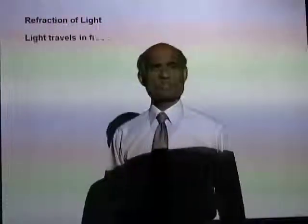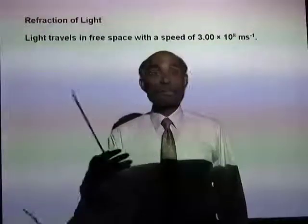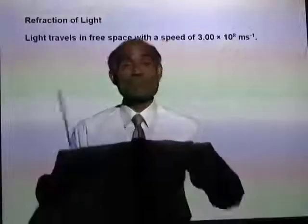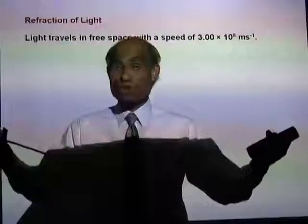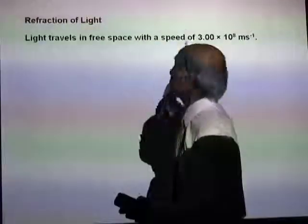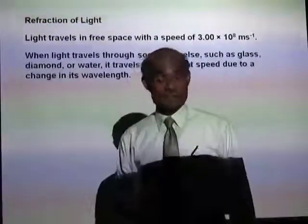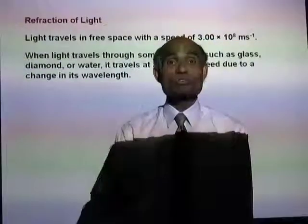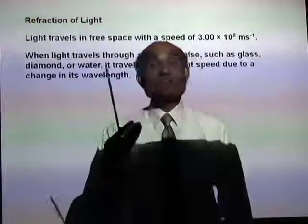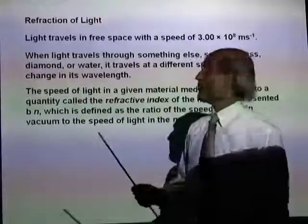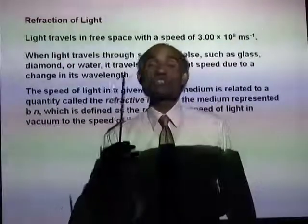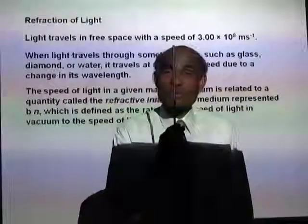Let's now talk about refraction of light. Light travels in free space with a speed of 3 × 10^8 m/s. In fact, all electromagnetic radiations travel with the same speed in vacuum. But if you allow light to pass through any other medium such as glass or water, its speed will reduce. The reduction in speed is always associated with a change in the direction of propagation.